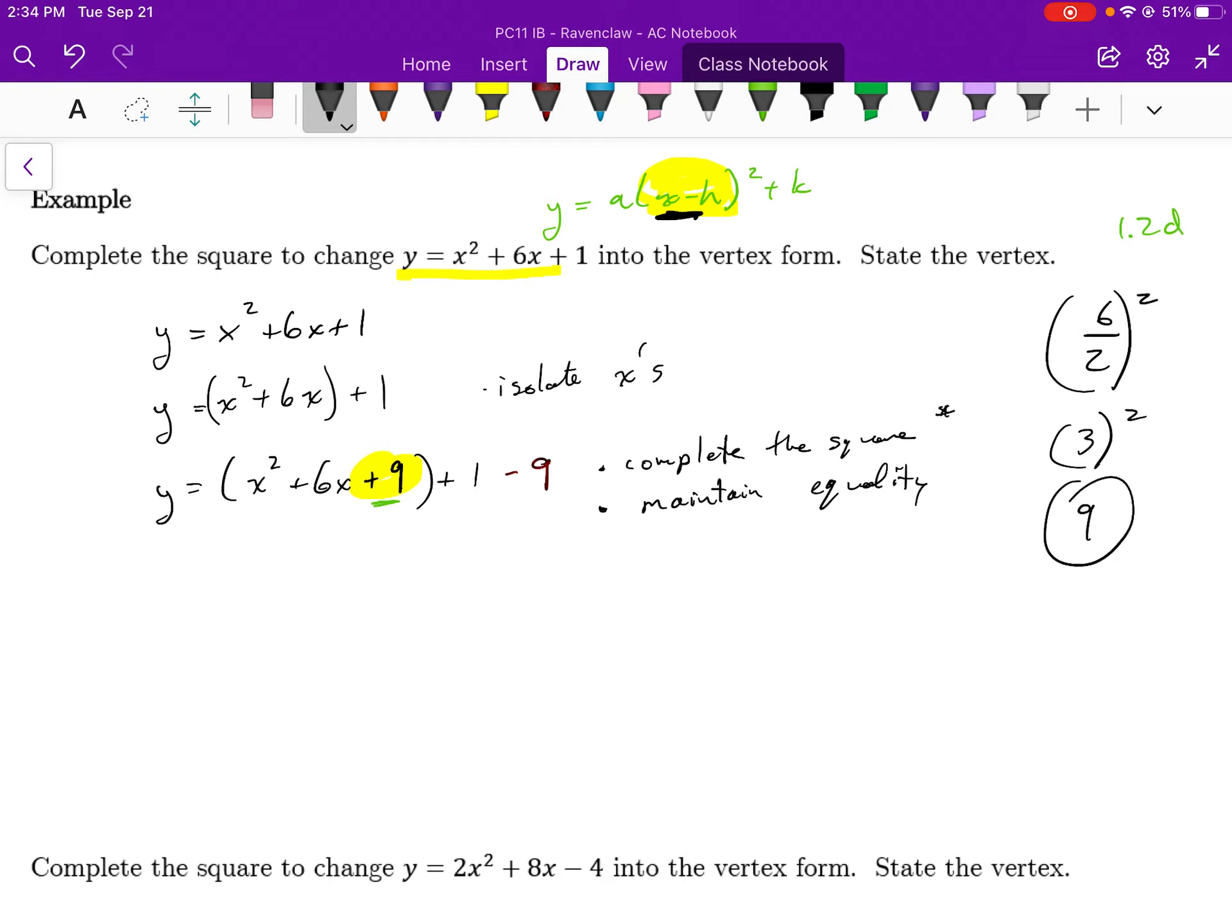And to complete the square, if you want, I can even further write that down. The coefficient of x, I divide that by 2, then square the result. That's where I got that 9 from.